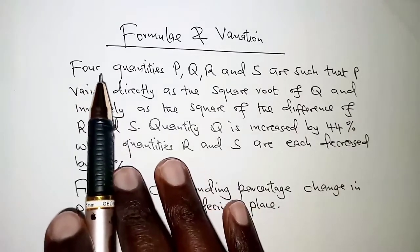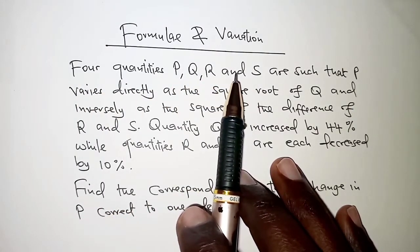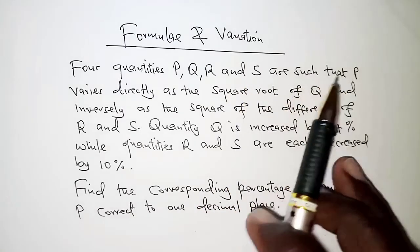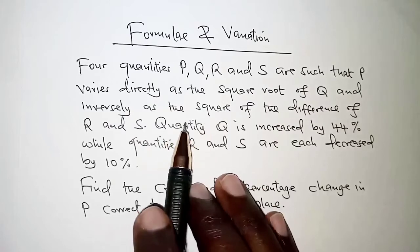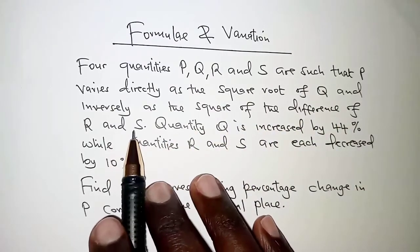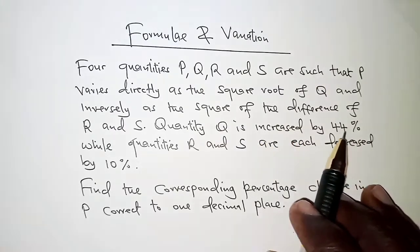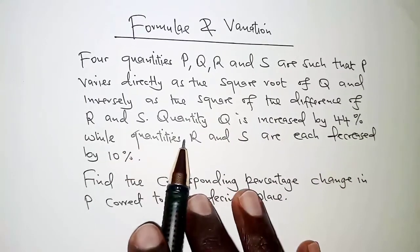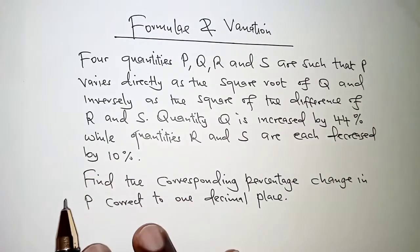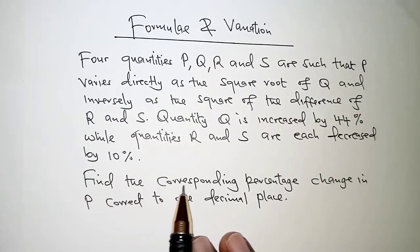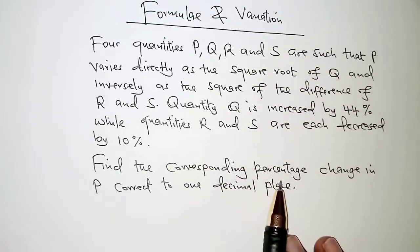So the question reads: for quantities P, Q, R, and S are such that P varies directly as the square root of Q and inversely as the square of the difference of R and S. Quantity Q is increased by 44% while quantities R and S are each decreased by 10%. Find the corresponding percentage change in P correct to one decimal place.